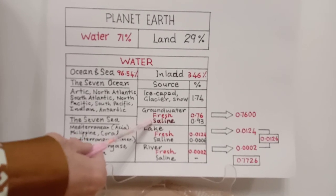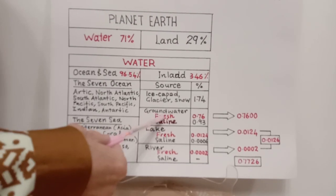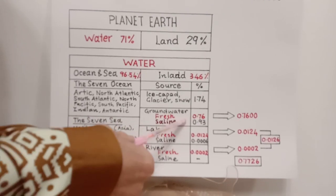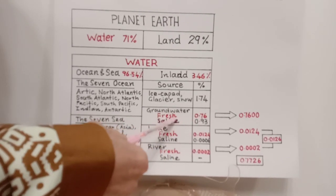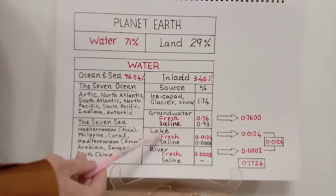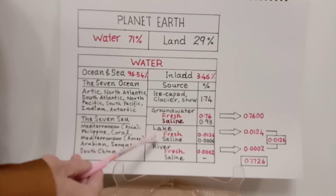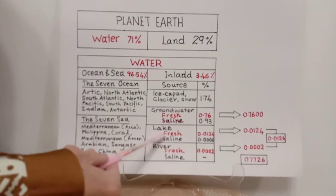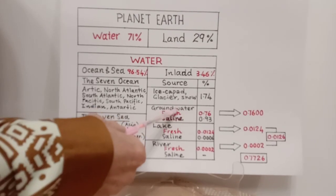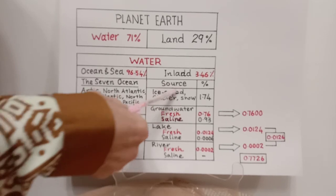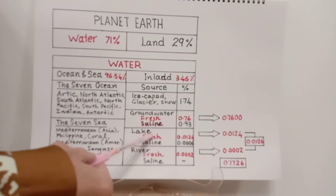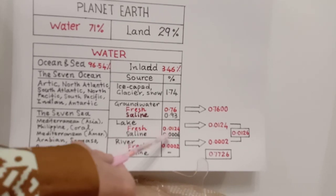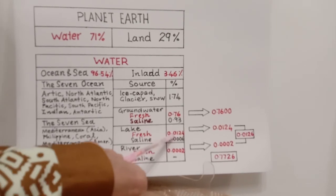For groundwater, freshwater contributes 0.76% and saline water contributes 0.93% of the total water. The third category of inland water is lakes, also divided into freshwater and saline lakes. The fresh portion of lake water is only 0.0124%, and the saline portion is even smaller at 0.0006%.